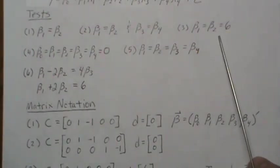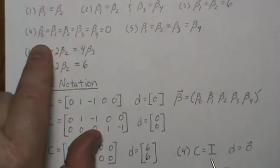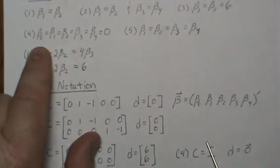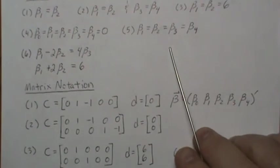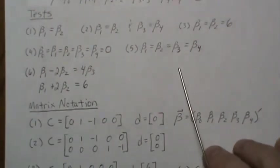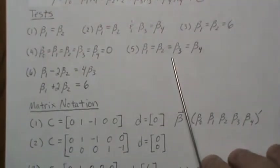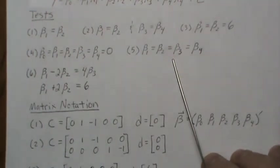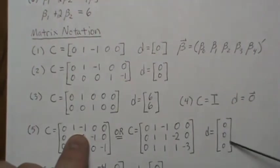For Test 4, are all beta parameters zero? The C matrix is the identity matrix — the first row corresponds to beta_0, checking if it's zero, and so on. For Test 5, Graybill's book provides two different possible C matrices to test the same hypothesis, making the point that the C used to test a given hypothesis is not unique. The D matrix is zero in each case.